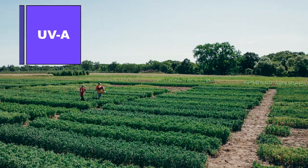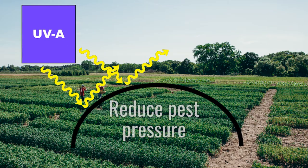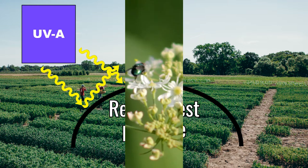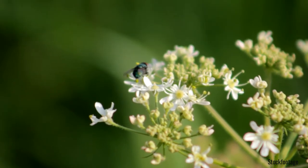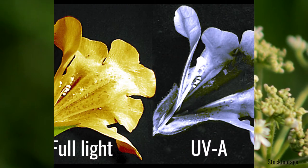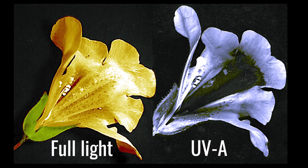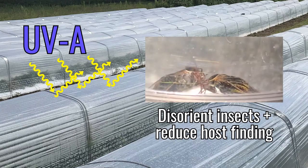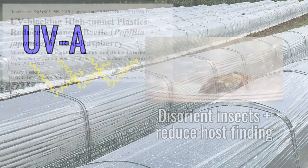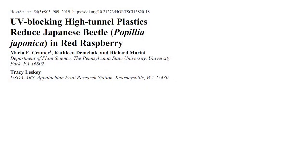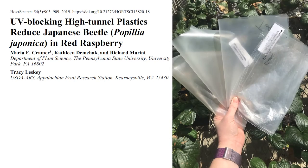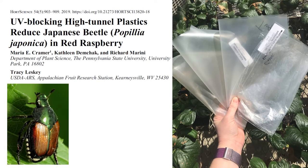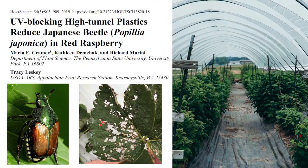Blocking UVA radiation, on the other hand, may reduce pest pressure. Many insects rely on UVA to navigate their environment by perceiving patterns exposed under UV light that are invisible to the human eye. Disrupting these patterns by blocking UVA can disorient insects and reduce host finding. In fact, a recent study at Penn State found that UVA blocking plastics reduced Japanese beetle presence and feeding damage on high tunnel raspberry.